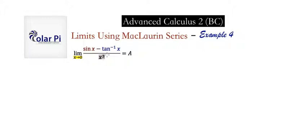The first of those is this example four, and example five will be next. So in example four, this is the limit that we have to deal with, and when we try to evaluate the limit as it's written, we get zero over zero.